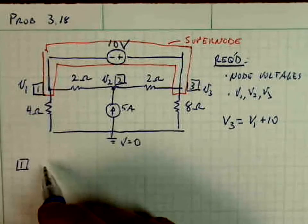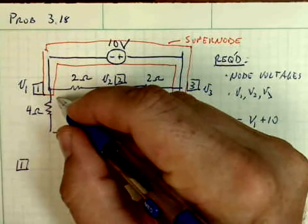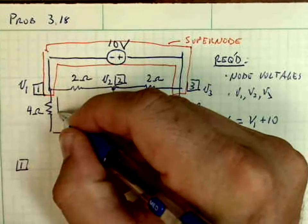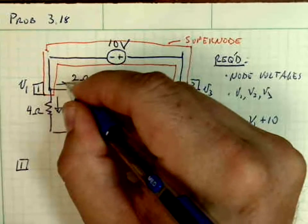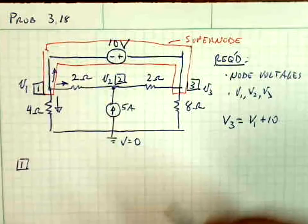So at node 1, let's draw the currents. Let's make the currents all go away from node 1. So I'm just going to draw their directions and write all the currents in terms of the node voltages.